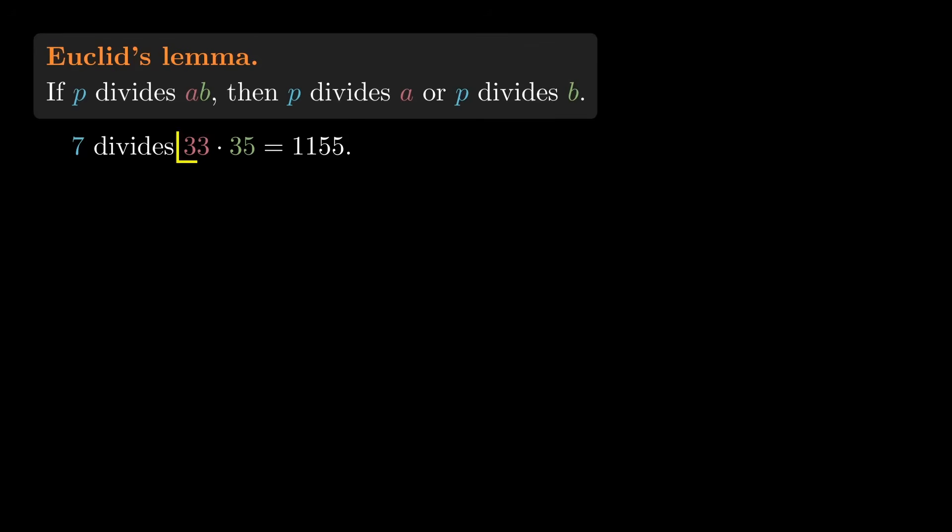If 7 doesn't divide one of these two numbers, why must it divide the other? If 7 doesn't divide 33, we want to conclude that it divides 35.